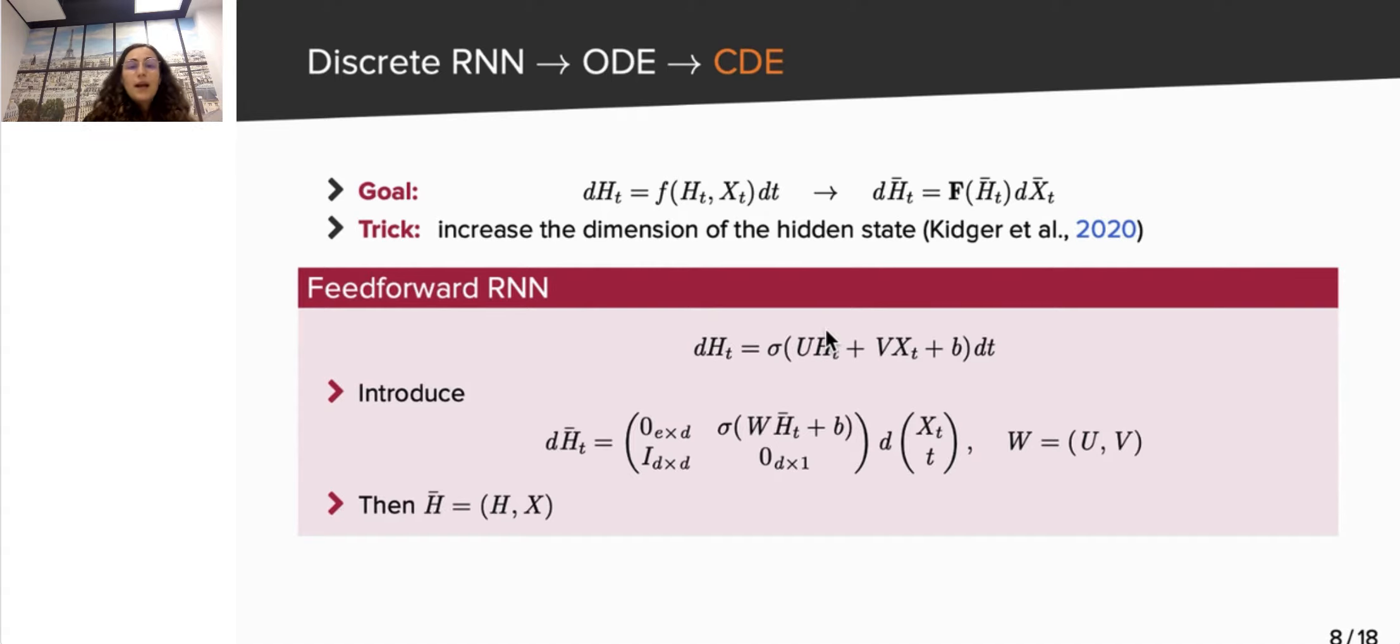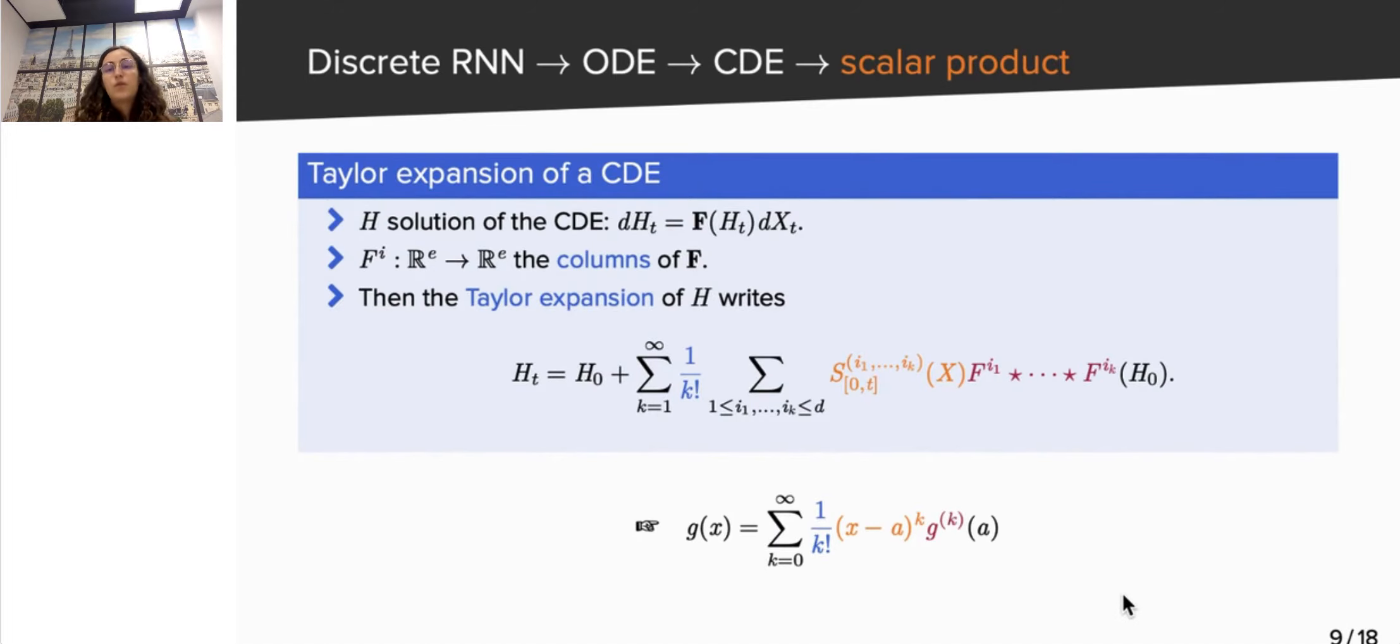Now, the next step is to apply tools from the theory of CDEs to make a scalar product appear. Let h be the solution of the CDE, and fi denote the columns of the matrix F bold. H can then be written in the form of a Taylor expansion. Recall that a Taylor expansion of a real-valued function g is an infinite sum of monomials, x minus a to the k, multiplied by higher order derivatives of g. If we compare our Taylor expansion to the classical one, we see that the derivatives are replaced by the term in red, consisting of higher order derivatives of the layer functions. And the powers of x are replaced by the term in orange, s_i1...iK of x, called the signature of x. We will give a few words on that later.